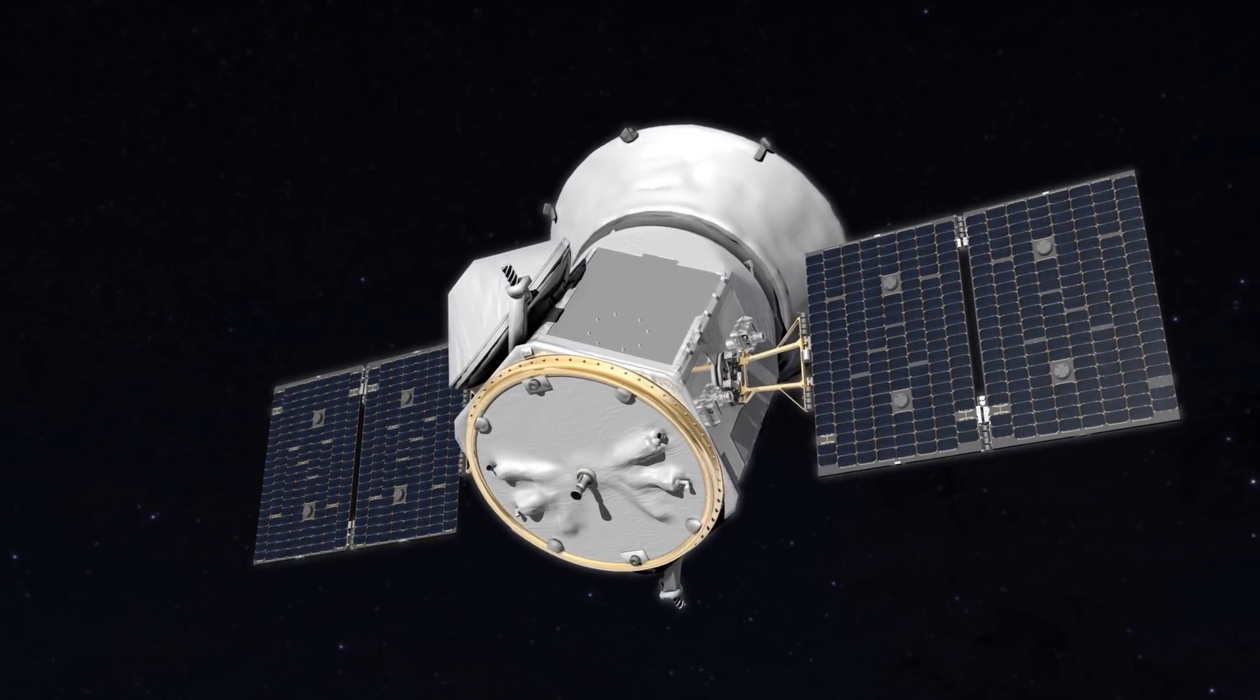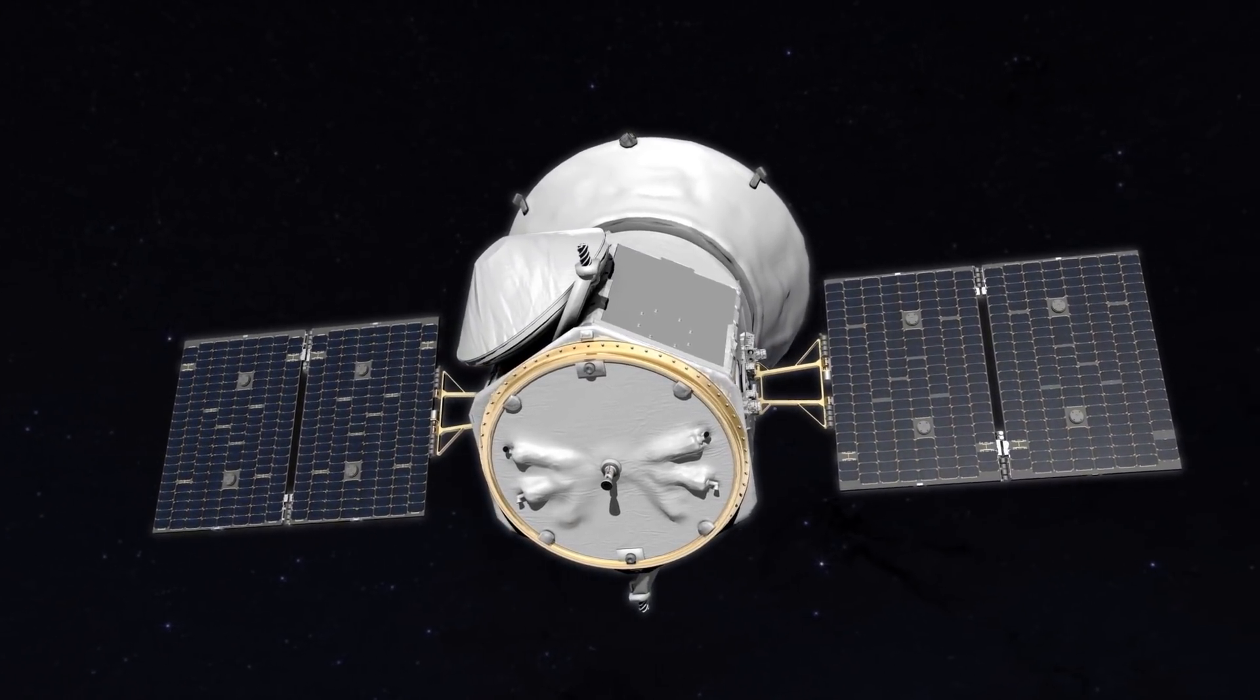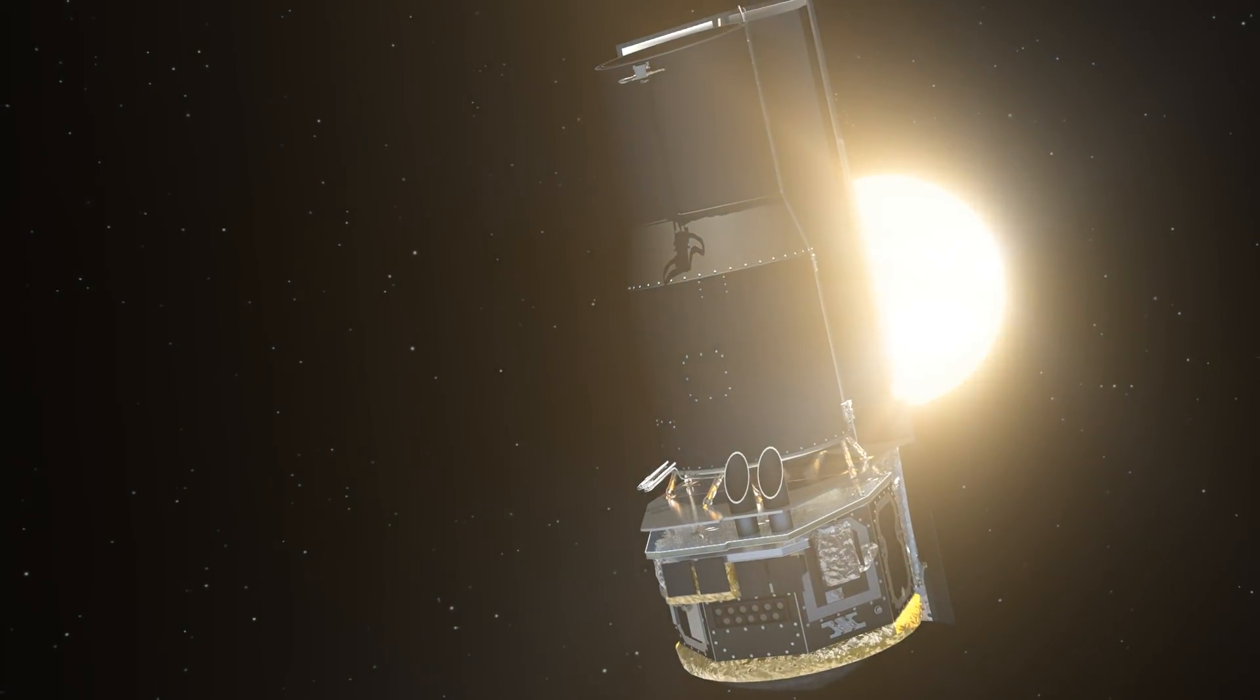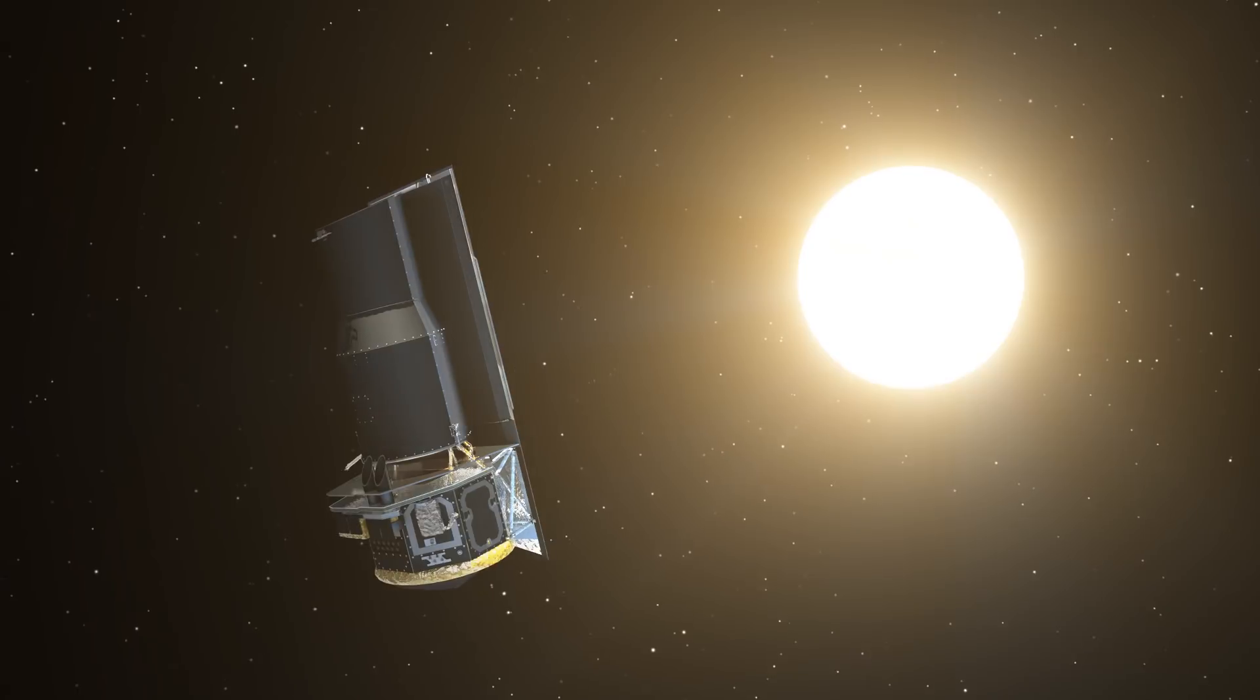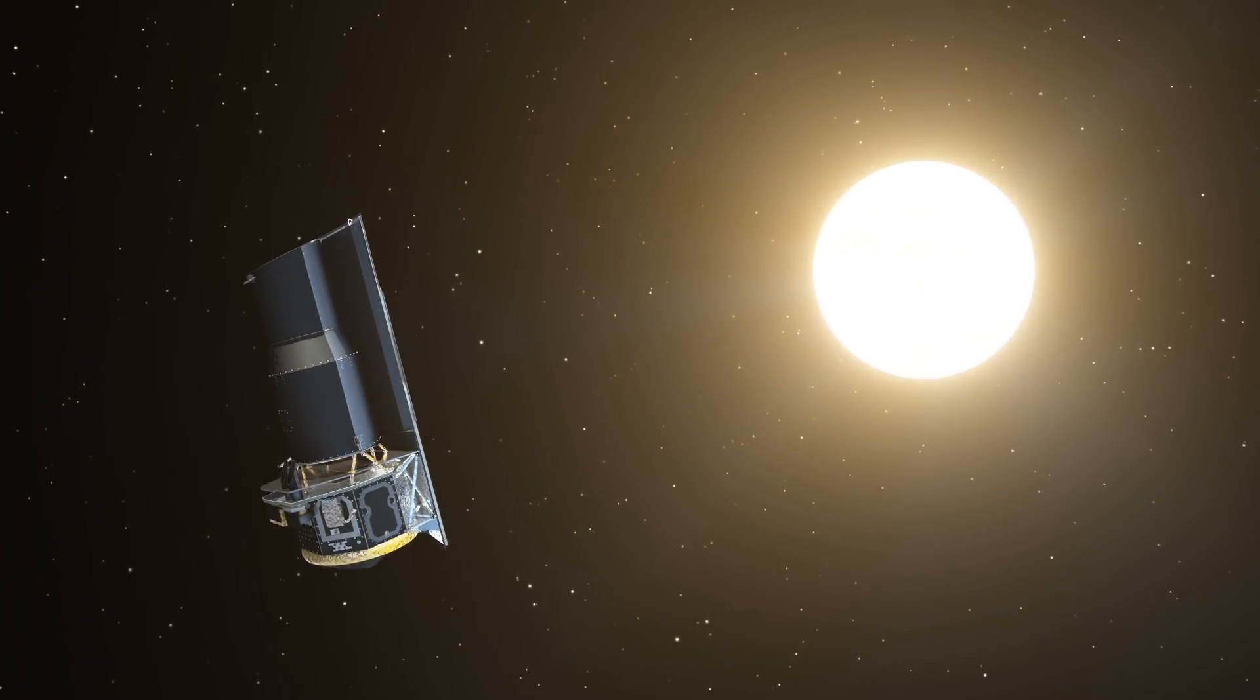NASA's upcoming TESS mission will likely find thousands more systems. And Spitzer will remain a powerful, complementary tool for studying small planets around small, cool stars like TRAPPIST-1.